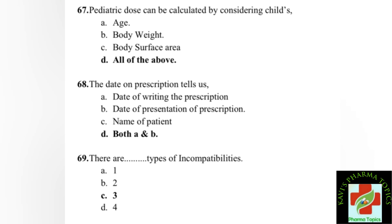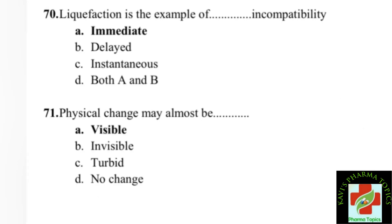Next question: what does the date on a prescription represent? The answer includes both the date of writing the prescription and the date of presentation of the prescription — both A and B, including the name of the patient. Next: how many types of incompatibility are there? There are three types of incompatibility: physical, chemical, and therapeutic.